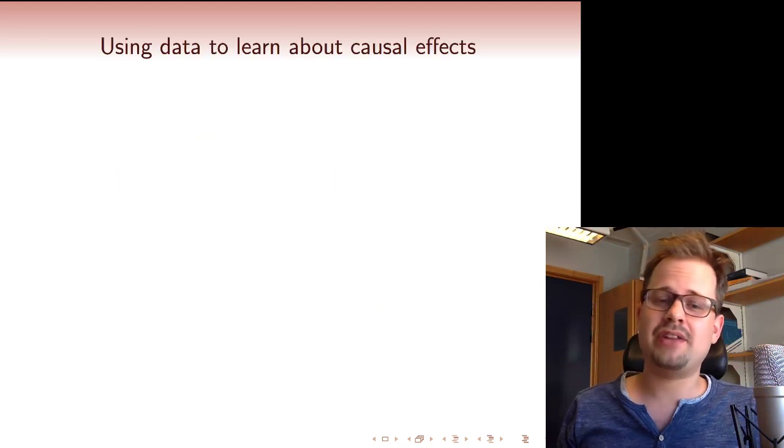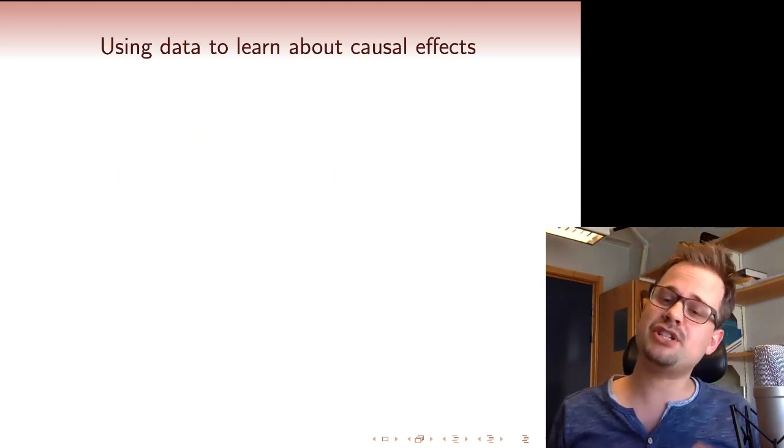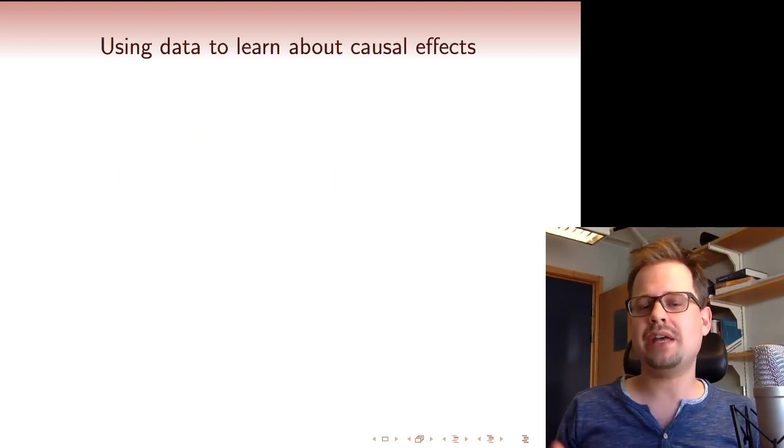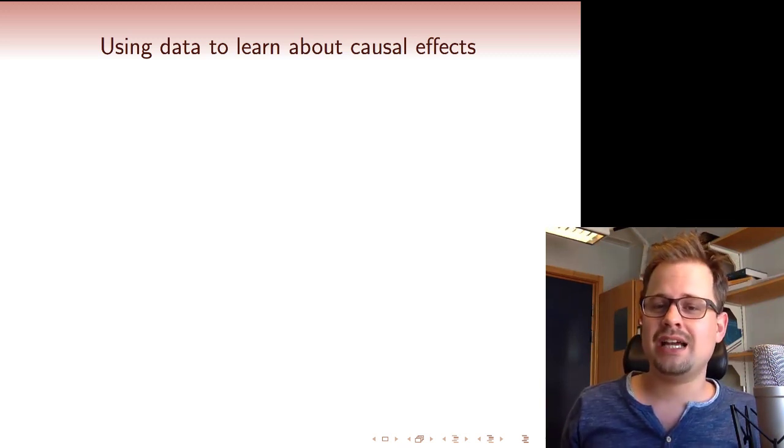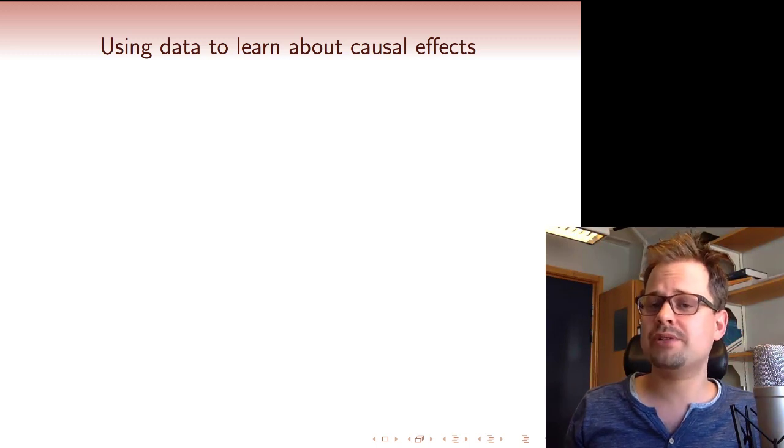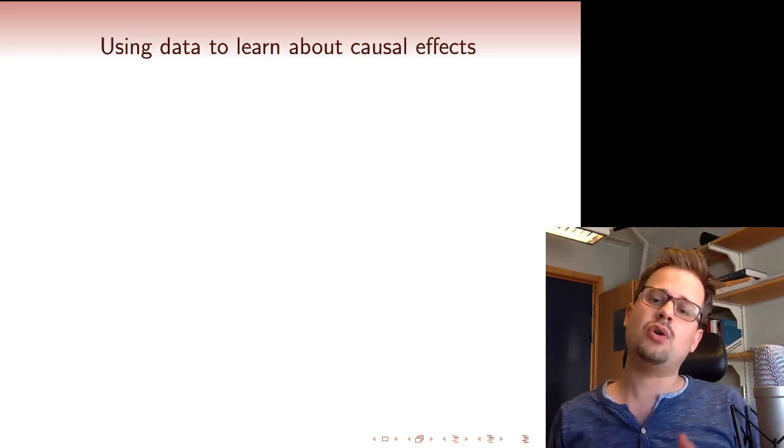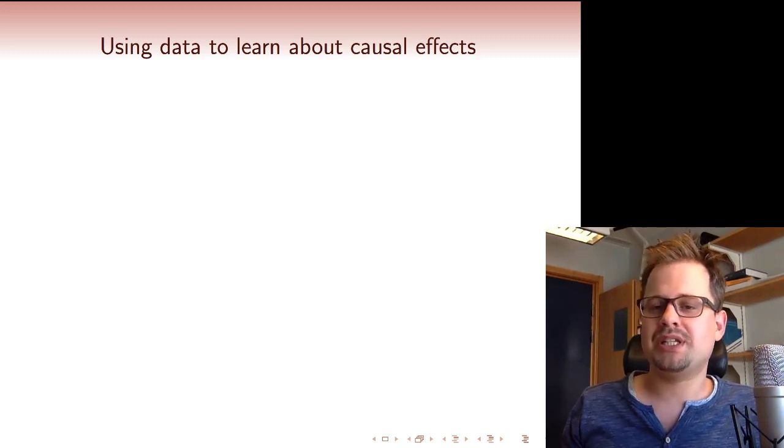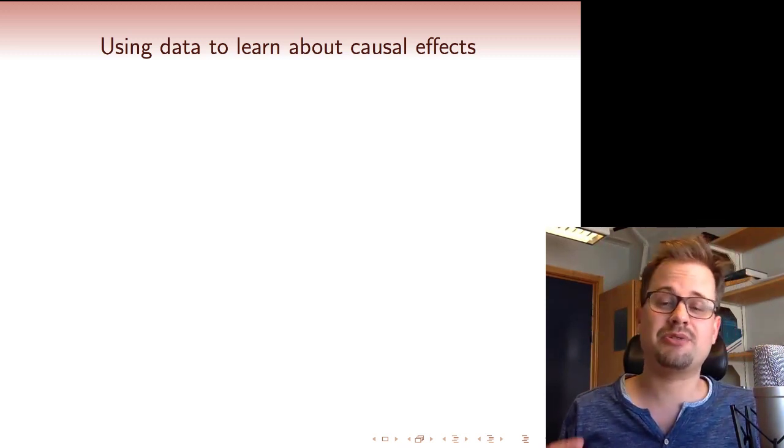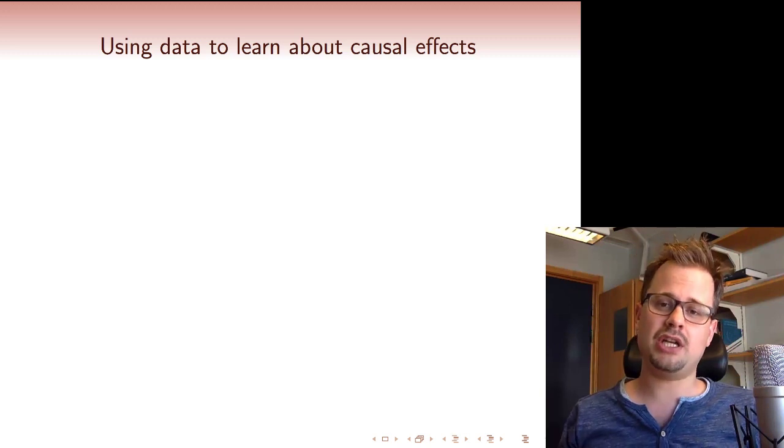You might remember that the original motivation for studying the linear regression model is that we wanted to have a tool that allows us to estimate causal effects. In the linear regression model, the causal effect of the regressors are tightly linked to the coefficients, to the slope coefficients. For example, beta1 would give the causal effect of changing the regressor x1 by one unit.